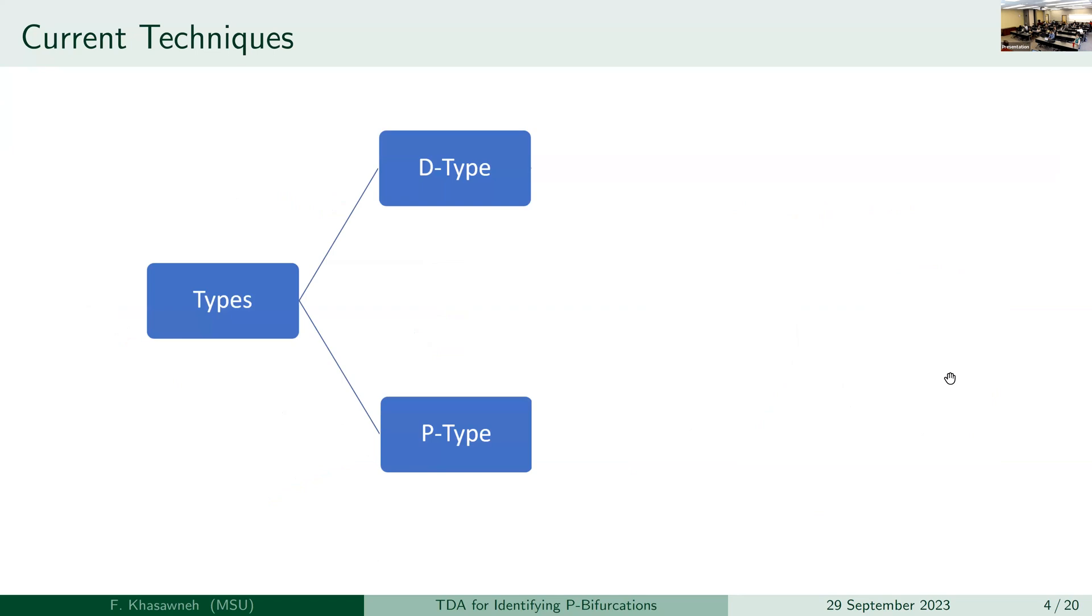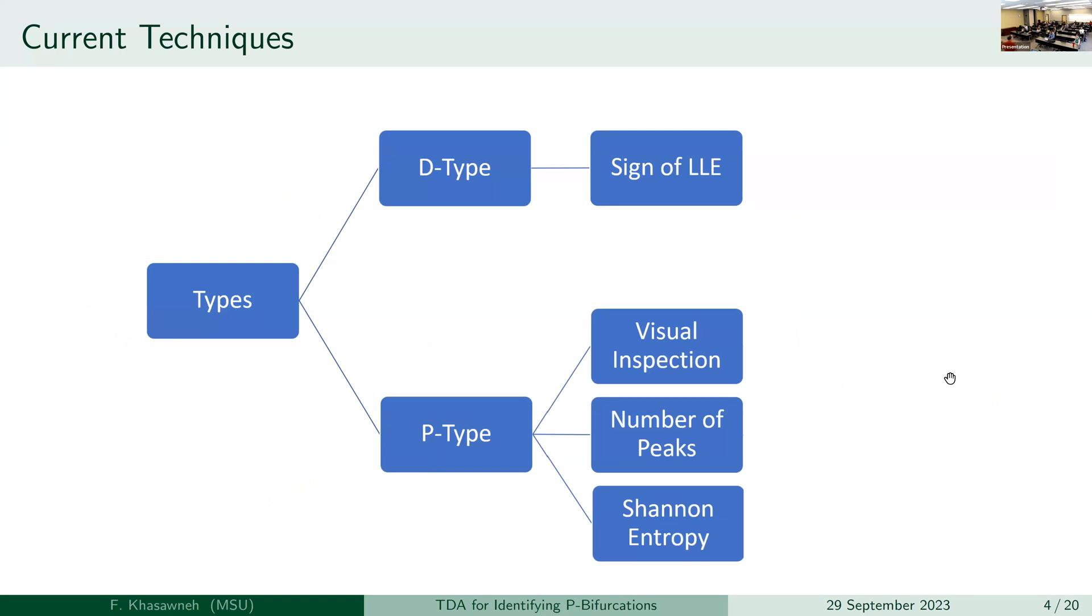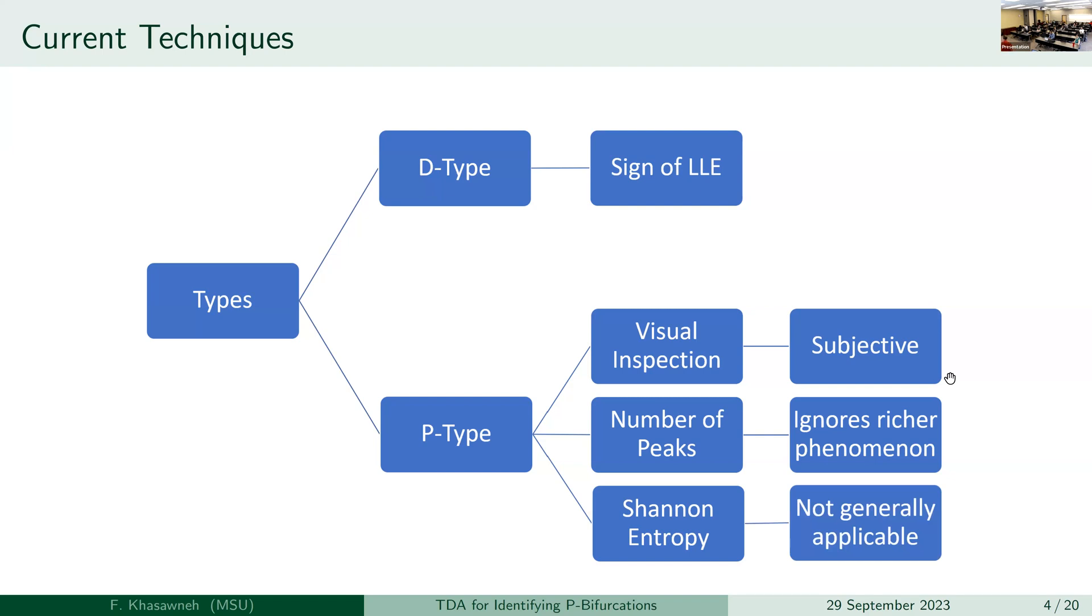There's a bit of a lag when I click. All right. So what is the state of the art right now to do this? So there are two types of bifurcations in these types of systems. The first one is the d type or the dynamic type. That one is related to looking at the sign of the largest Lyapunov exponent. That's not the type I will be talking about. I'll be talking about the p type bifurcation. And the state of the art for this one is visual inspection, which you will find a lot in the literature. People literally plot these PDFs as a function of the varying parameter, and then they will say things like, it seems that there is another peak appearing at value so and so. Or they will look at the number of peaks, or they will use the Shannon entropy. But all of these methods have limitations.